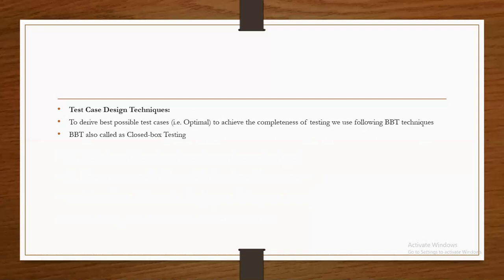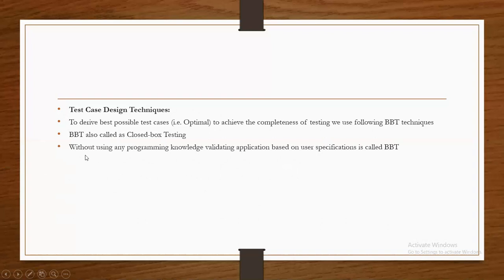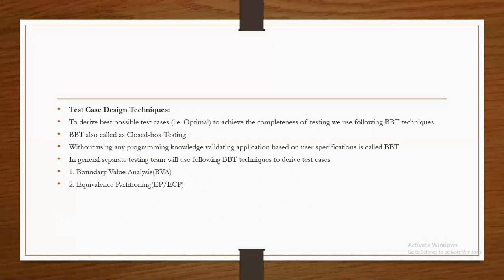Without using any programming knowledge, validating an application based on user specifications is called black box testing. We use black box testing techniques to derive the test cases: boundary value analysis, equivalence class partition, error guessing, decision table or cause-effect table, and state transition. These are the techniques we are going to use. For detail about these techniques, I explained them in previous sessions — you can watch those to get an idea.